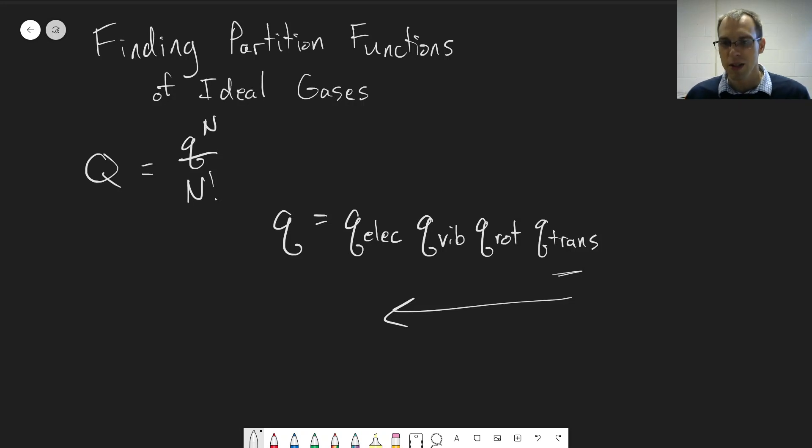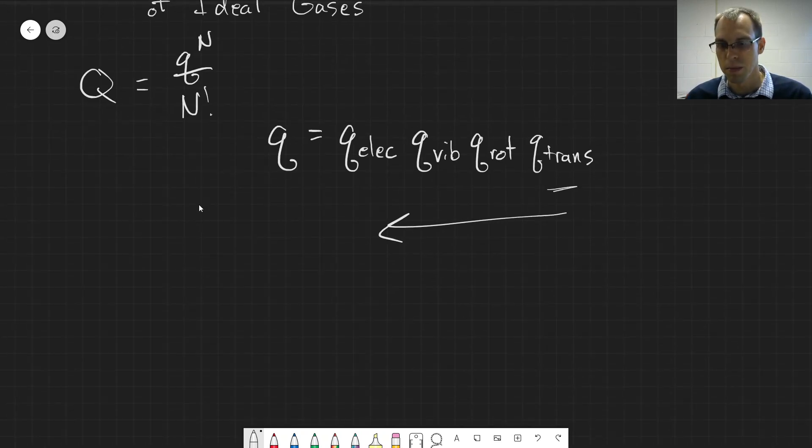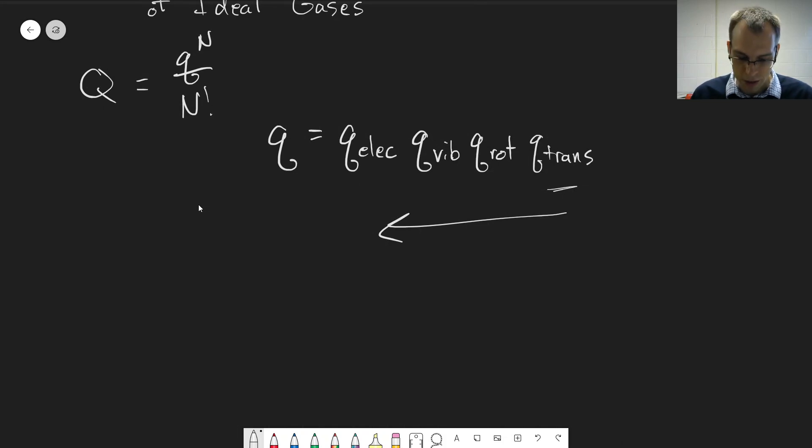Now before we start doing this, there's one slight modification for little q that we need to make to the definition of the partition function. So for big Q, we wrote that it's equal to the sum over our possible energies, e to the minus beta e sub j.